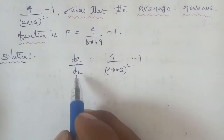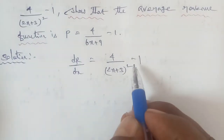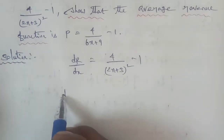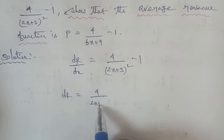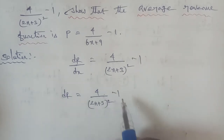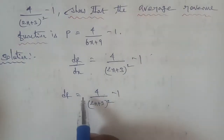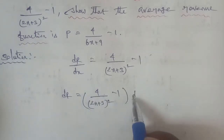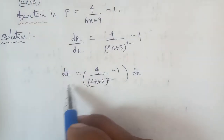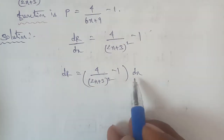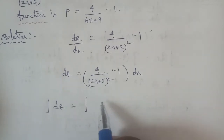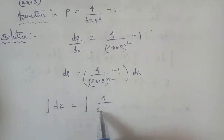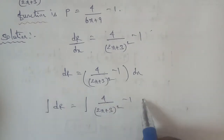Next, separating variables and applying dx to the other side: dr equals 4 by (2x plus 3) the whole squared, minus 1, into dx. Now integrating both sides: integration of dr equals integration of 4 by (2x plus 3) the whole squared, minus 1, into dx.